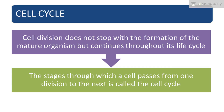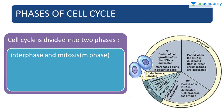Cell division does not stop with the formation of the mature organism but continues throughout its life cycle. The stages through which a cell passes from one division to the next is called the cell cycle.